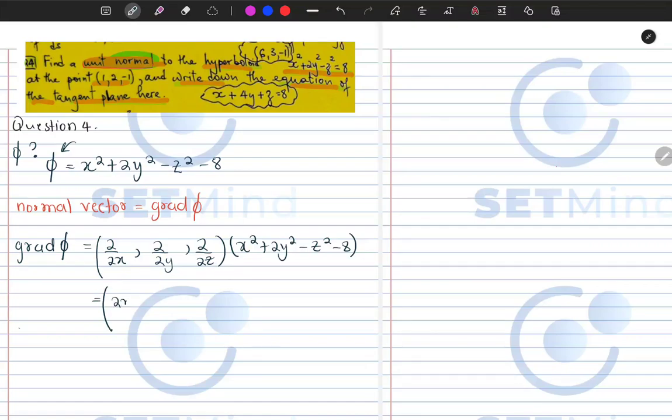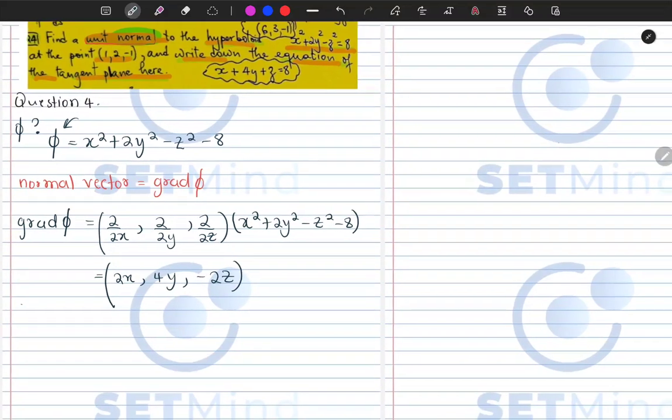So I will have, when I derive with respect to x, 2x. When I derive with respect to y, I'll have 4y. With respect to z, I'll have minus 2z.